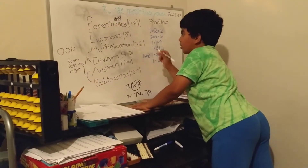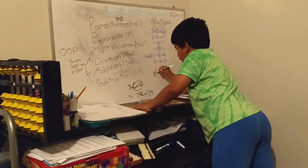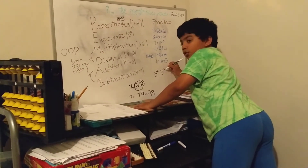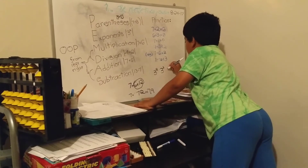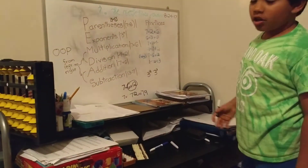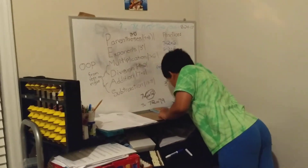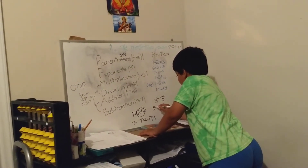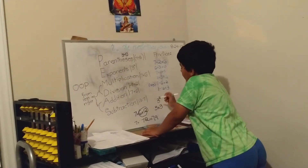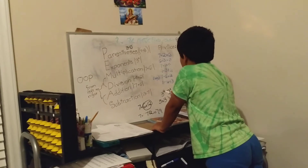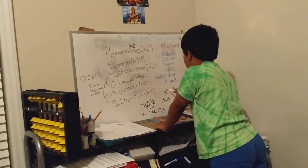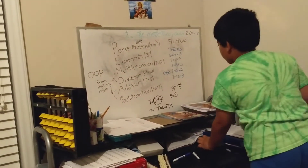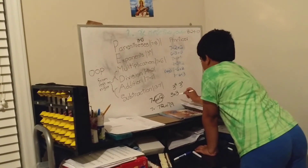Let's do an example problem: three squared. This is actually called 'squared.' When it's three with a three on top, that's 'cubed,' and when it's four or more it's called 'to the fourth power,' 'to the fifth power,' and so on. Three with a two on top is the same as three times three, because that two is telling us how many times the three needs to appear. So three times three equals nine.